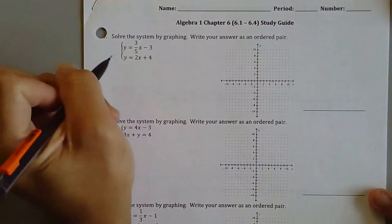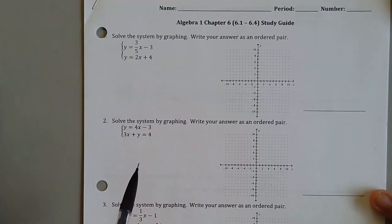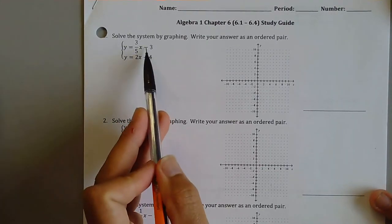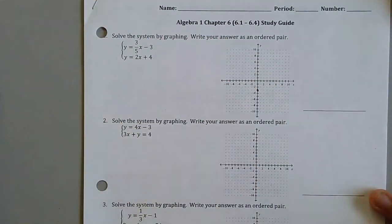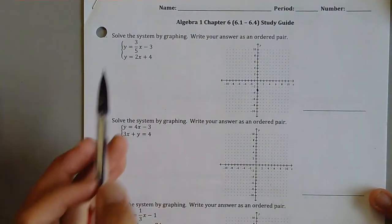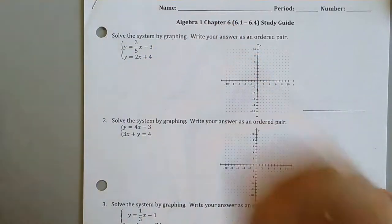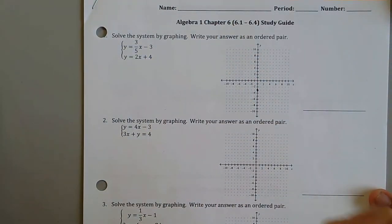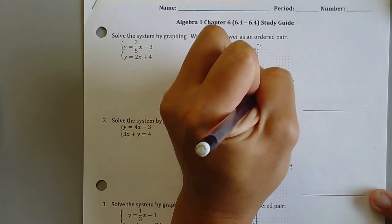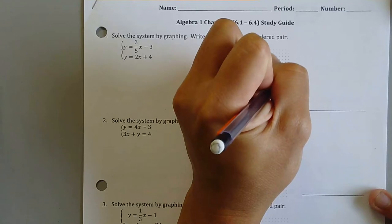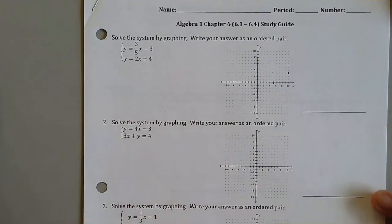Going ahead and graphing this one at a time — just look at it one at a time. We know we need to graph our y-intercept first. This is our y-intercept of negative 3, so our y-intercept of negative 3 is right there. And then we go ahead and use our slope of 3 over 5. Up 3, rise over run — slope is rise over run. So we go up 3, across 5, up 3, across 5.